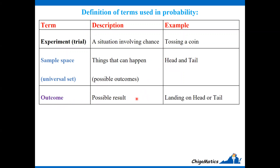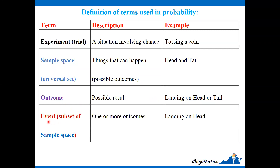An outcome is a possible result. The coin landing on heads or tails is an outcome. An event can be referred to as a subset of the sample space — that is, one or more outcomes. So landing on heads is an event.